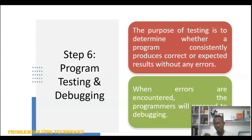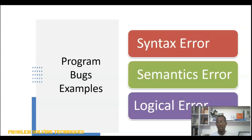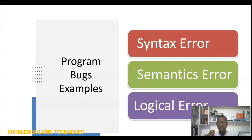When we supply data to test our programs and encounter an error, this means we have to do what is called program debugging. It is important to note that errors in our programs are called bugs. The process of removing bugs is called debugging. Debugging simply means the process of detecting, locating, and correcting bugs, which are errors or mistakes found in our program.